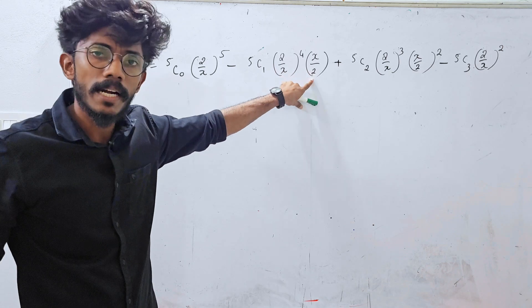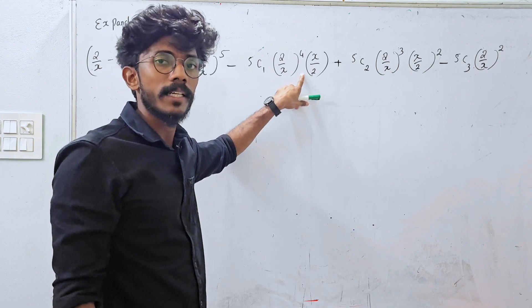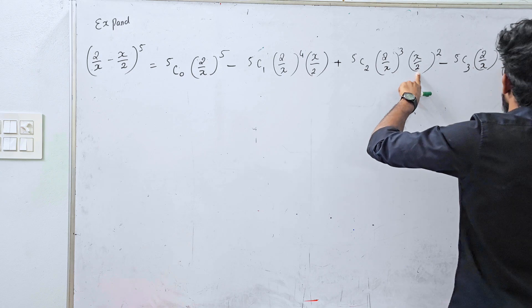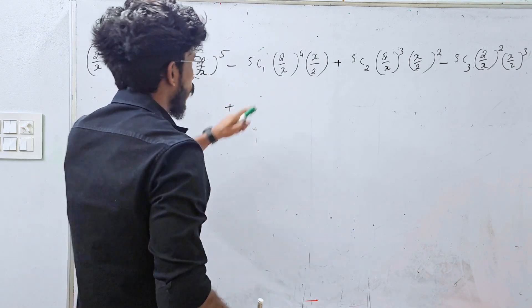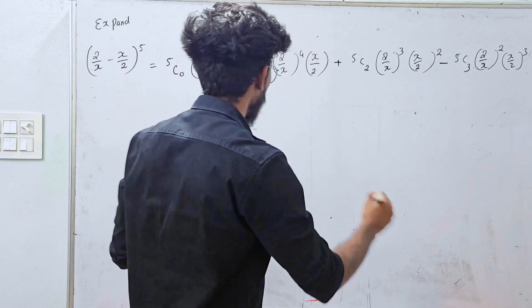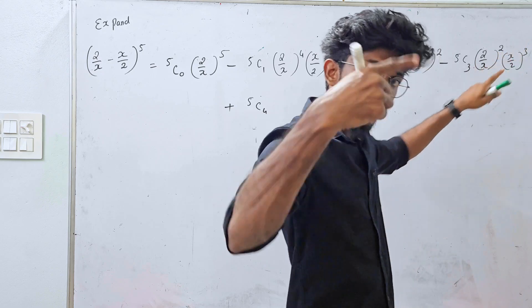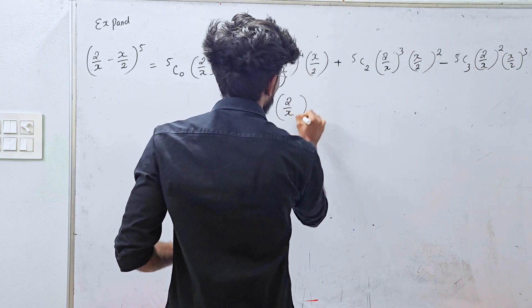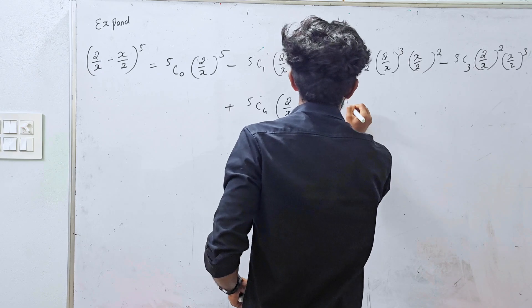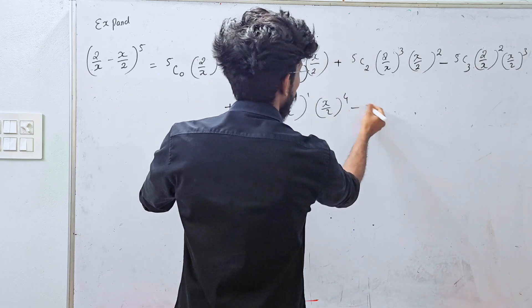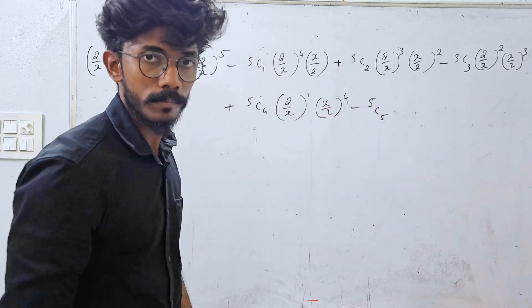The whole raised to 3, negative, plus 5C1, 5C2, 5C3, 5C4 with powers: 2 by x raised to 2, 2 by x raised to 1, 2 by 2 raised to 4, negative 5C4, 5C5, nCn — stop expansion.